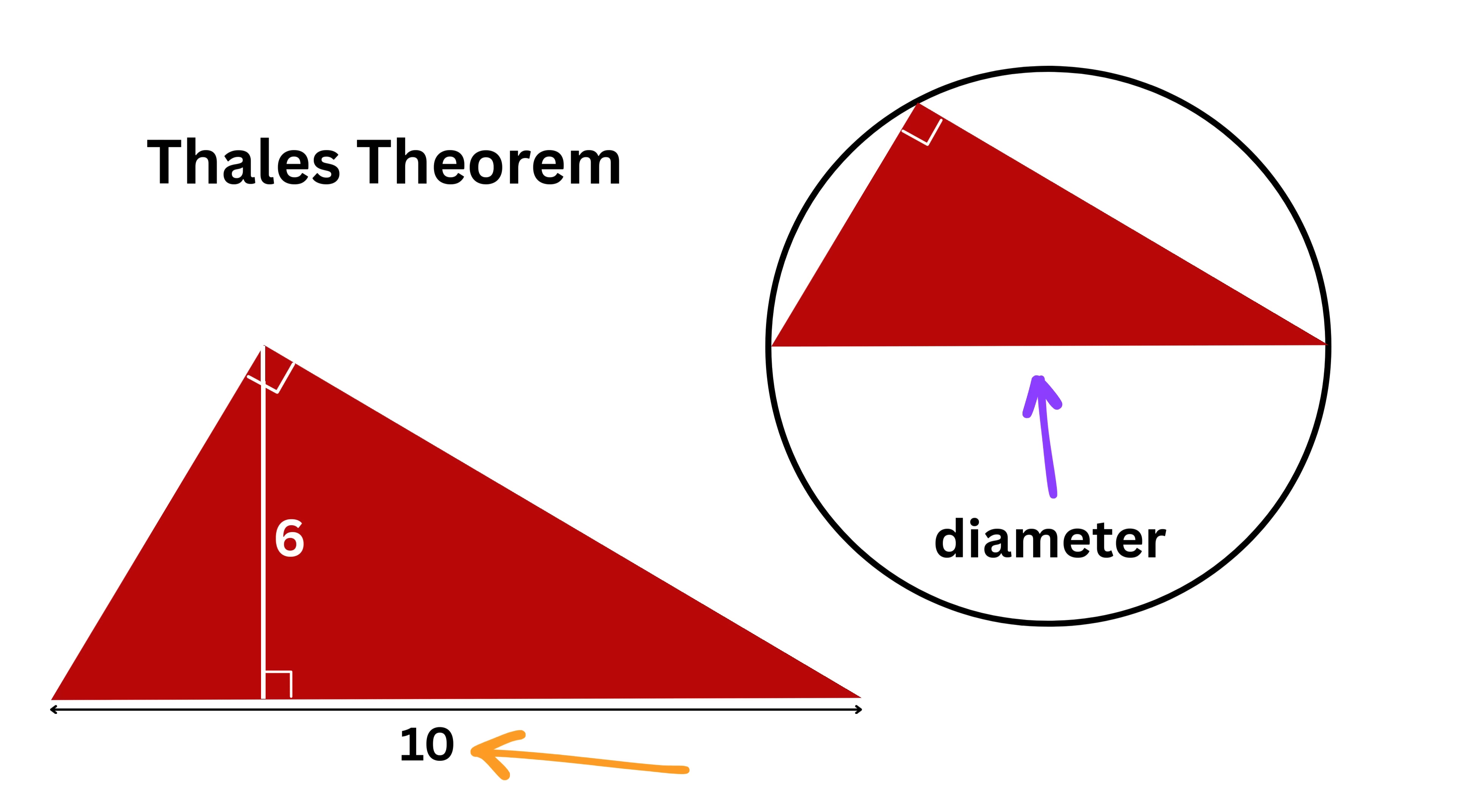Now, if the hypotenuse is 10, this means the diameter is 10 units. So the radius of the circle is 5. Now, suppose we drop a perpendicular from the right angle vertex to the hypotenuse. This becomes the height from the right angle to the hypotenuse. But here's the thing.